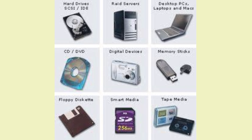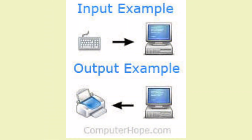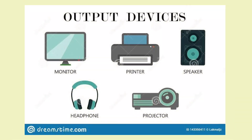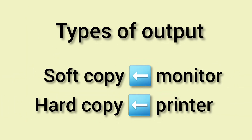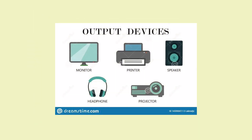The last unit of computer hardware is the output unit. The data is entered through input devices, processed by the CPU, and stored on secondary storage devices. The data must then be displayed on the monitor. Data must be in the form of a hard copy from the printer — monitors display soft copy while printers display hard copy output. Output devices include monitor, printer, speaker, headphones, and plotter.